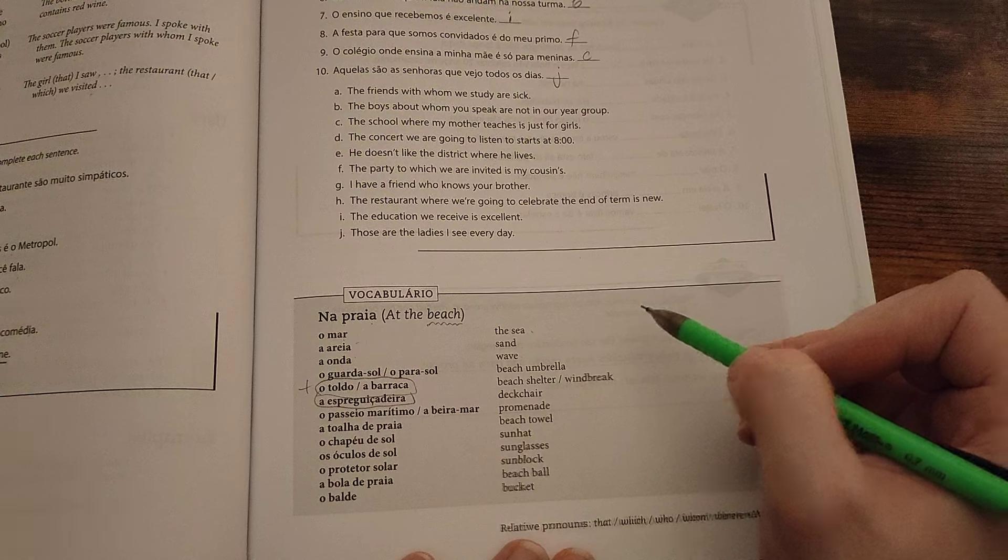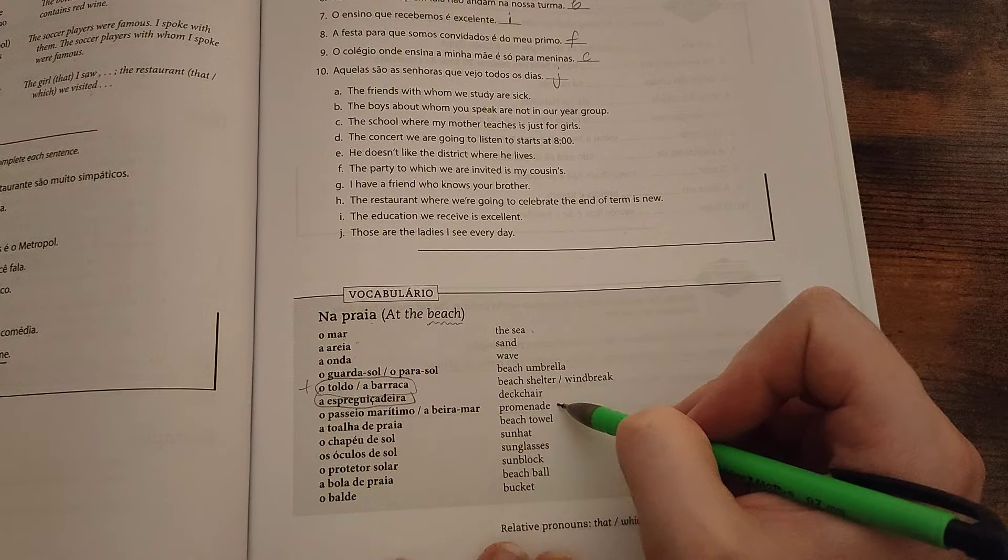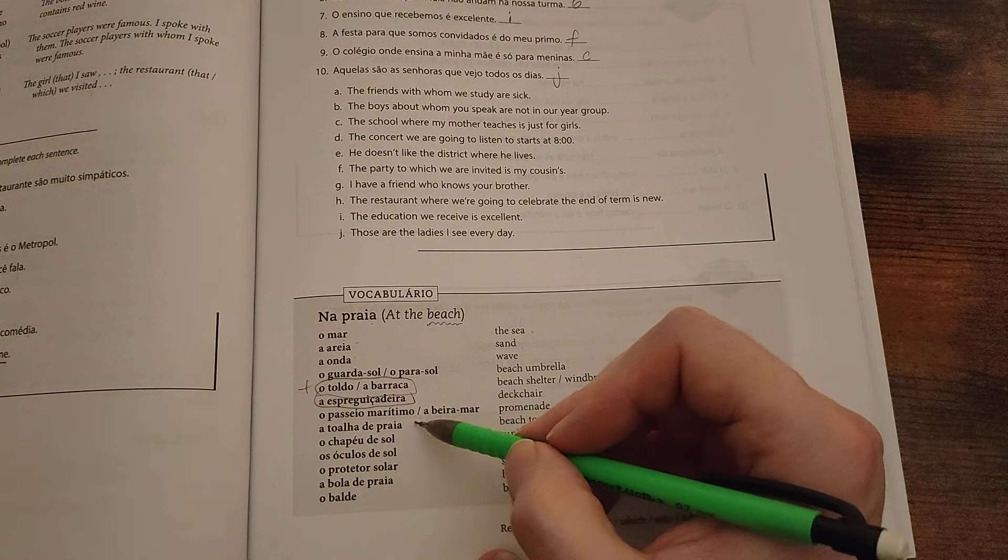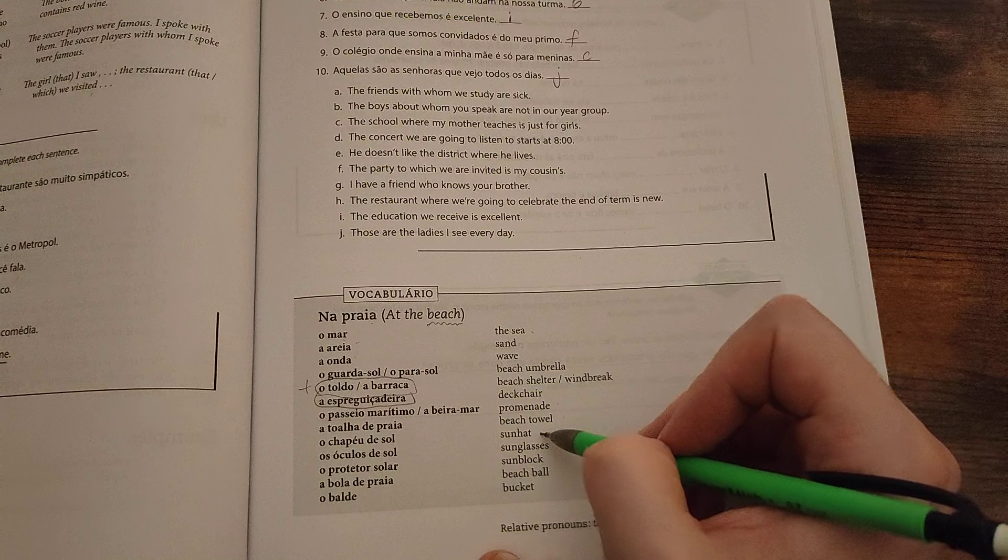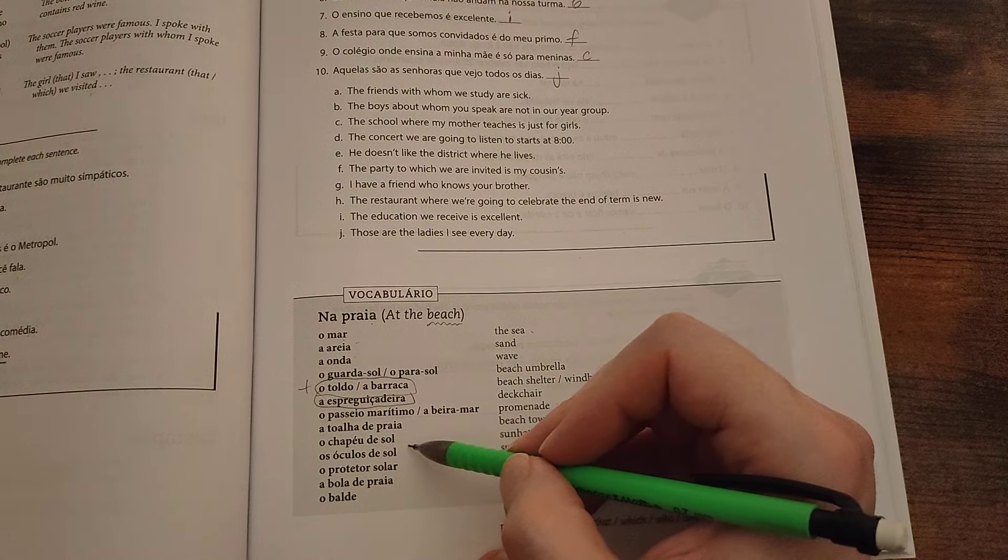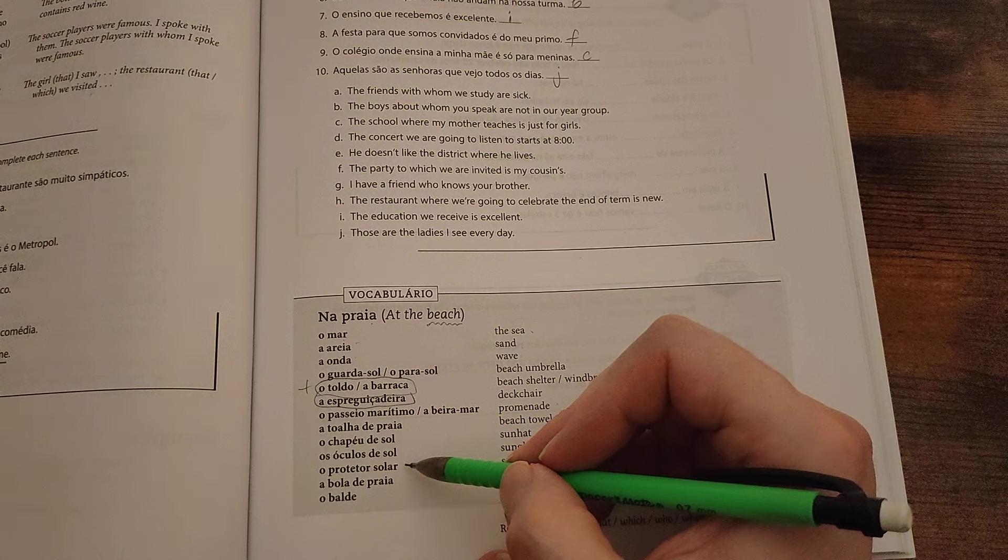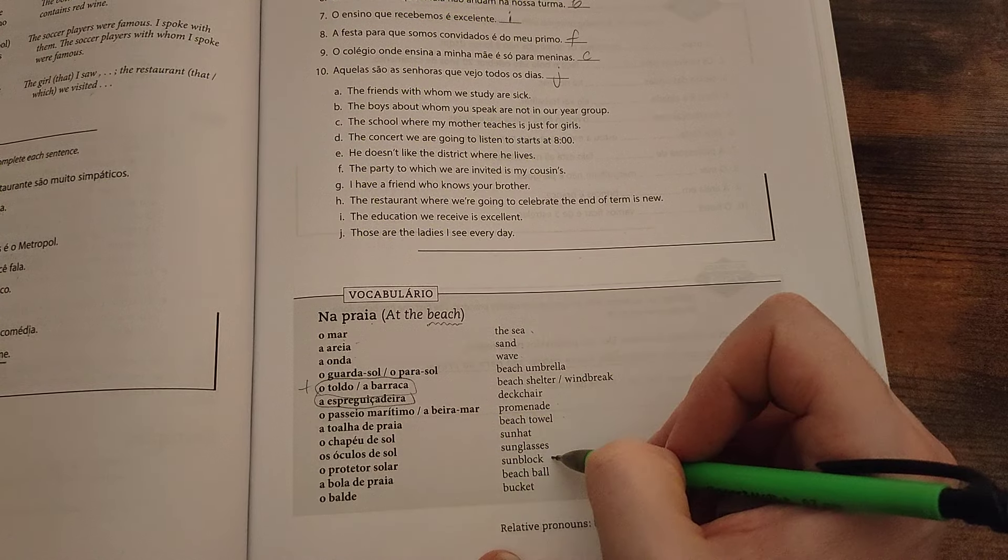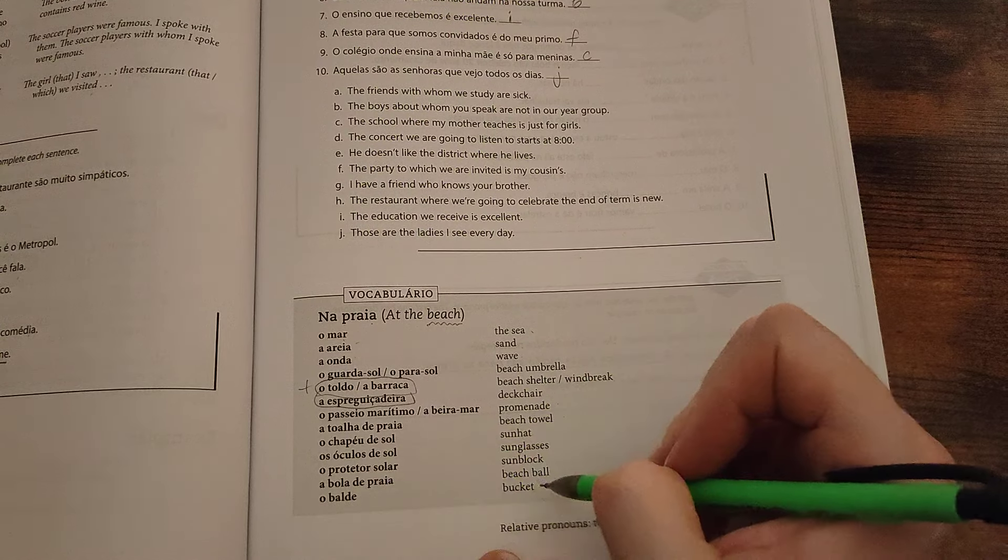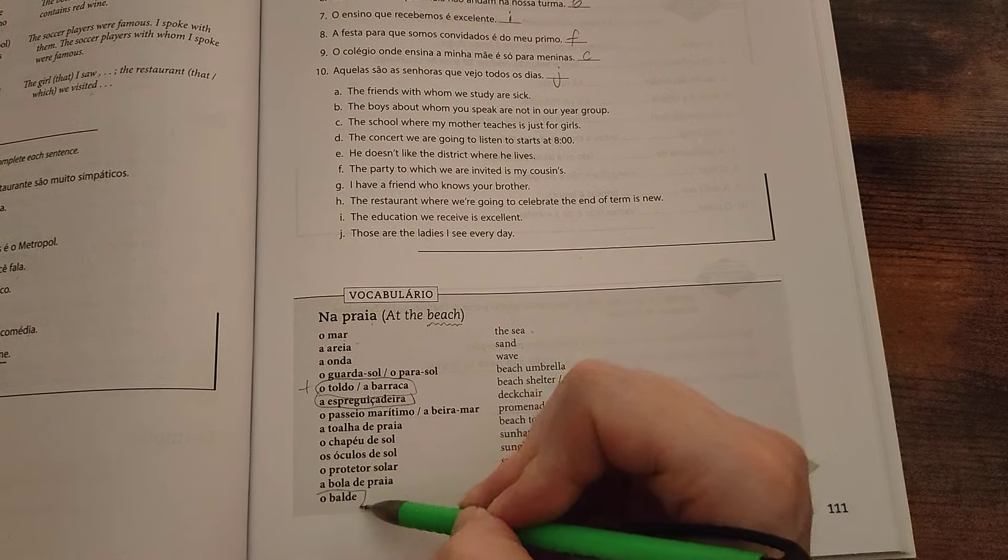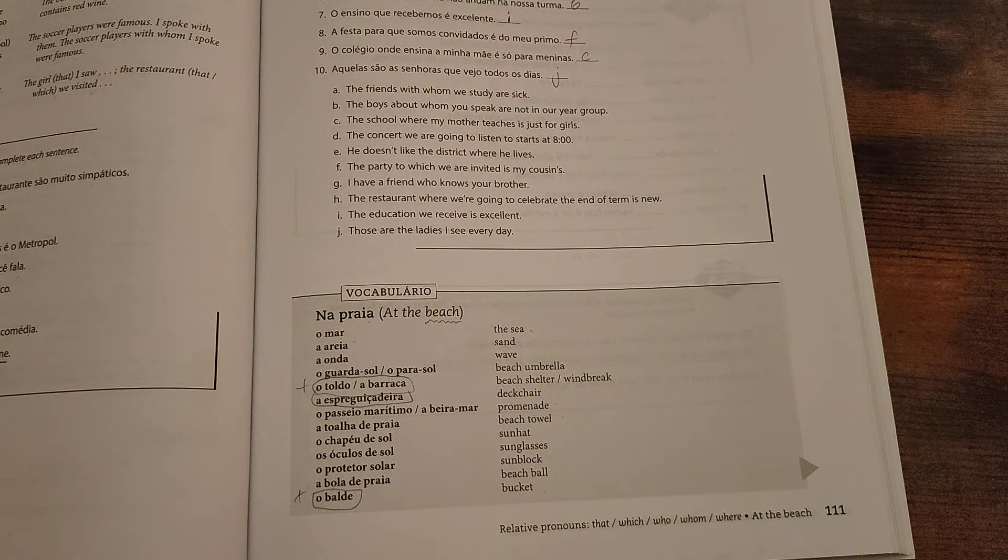A espreguiçadeira, deck chair. O passeio marítimo, a beira-mar, promenade. A toalha de praia, beach towel. O chapéu do sol, sun hat. Os óculos do sol, sunglasses. O protetor solar, sunblock. A bola de praia, beach ball. O balde, bucket.